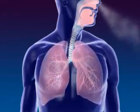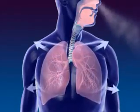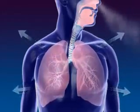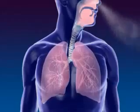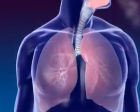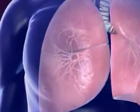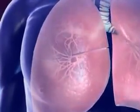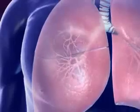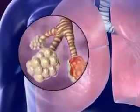Lungs are spongy tissue with alveoli and blood capillaries. Breathing occurs because of the expansion and contraction of the lungs. The bronchi carrying the air subdivide into smaller branches called bronchioles.